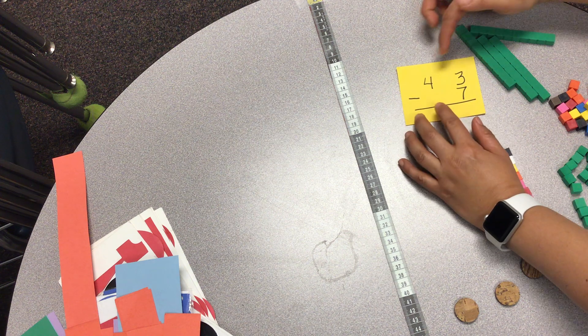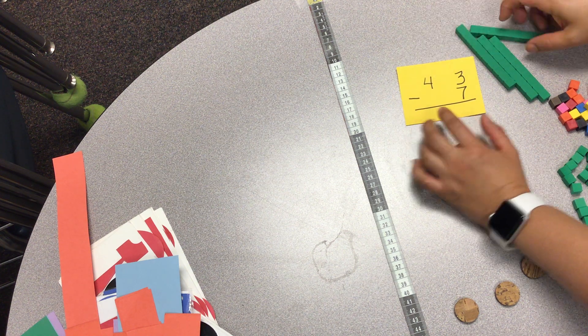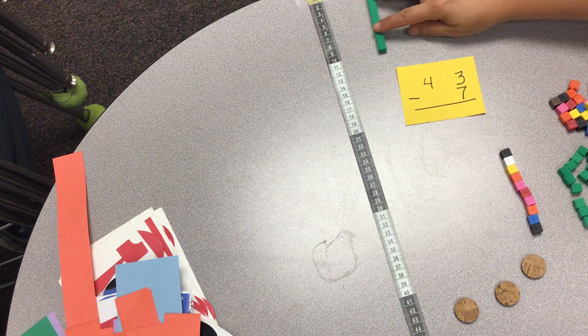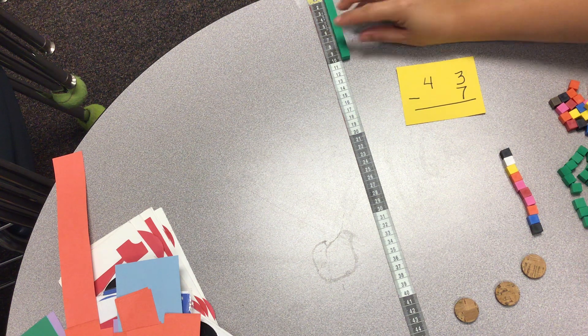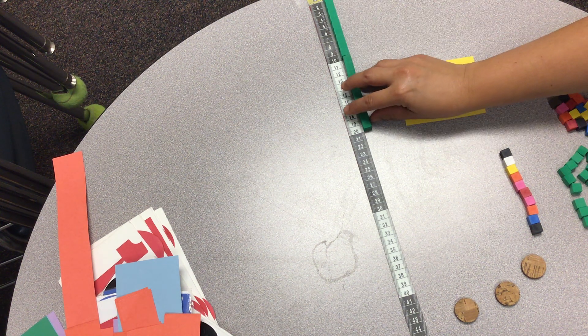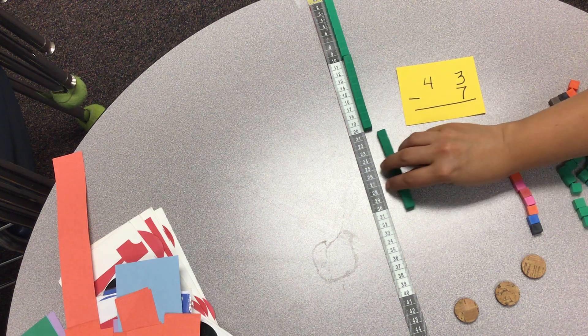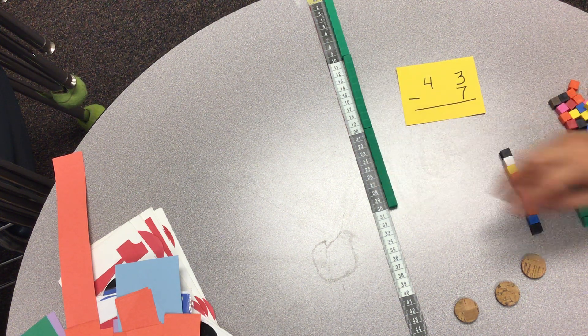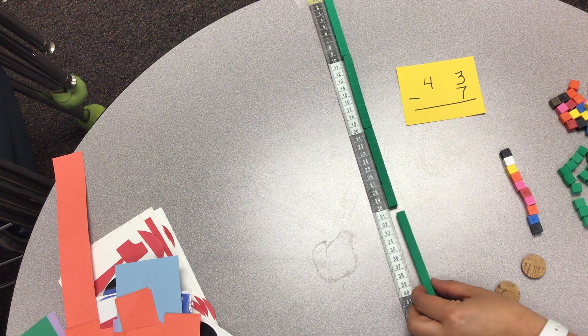And 43 has 4 tens and 3 ones. So when we put a 10, we are putting 10. We put another 10, 2 tens, it's 20. 3 tens equals 30, and 4 tens equals 40.